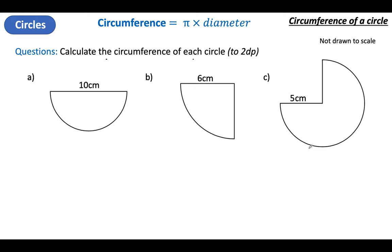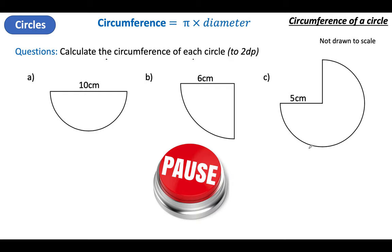I want everyone to have a go and see if it matches my answers. Pause the video — calculate the perimeter of each shape to two decimal places — and unpause when you're done.